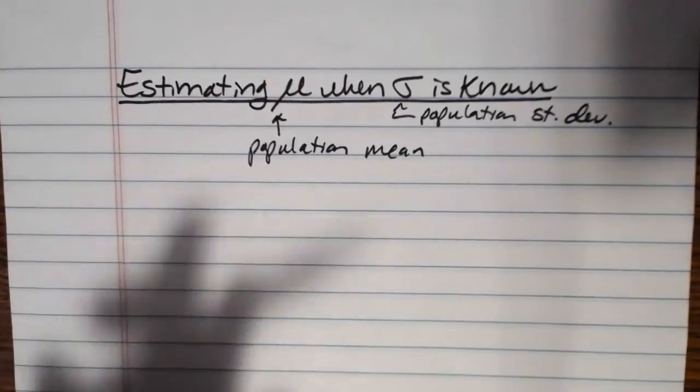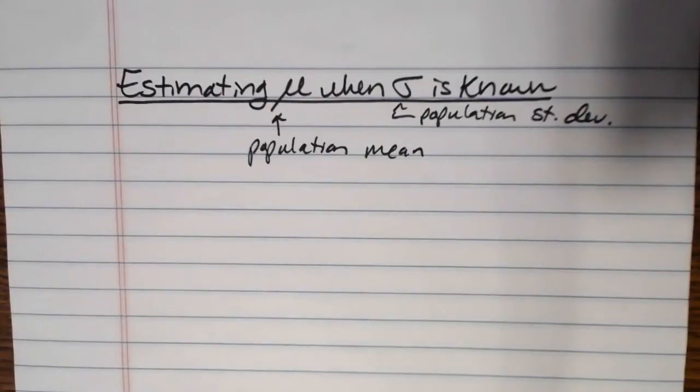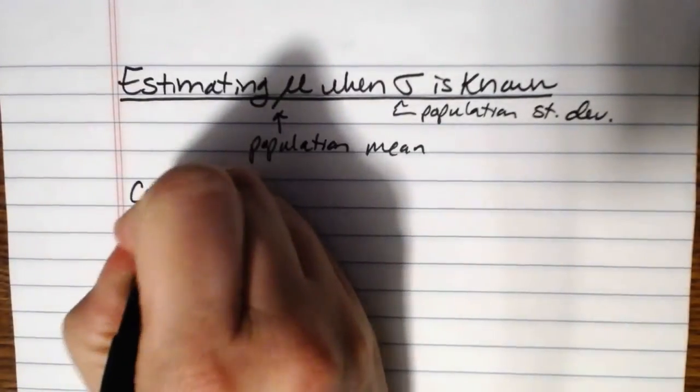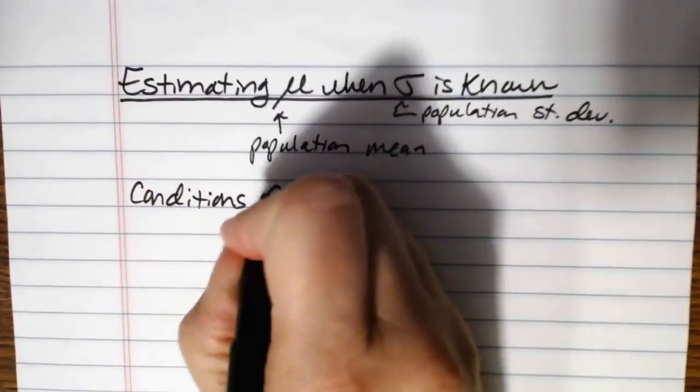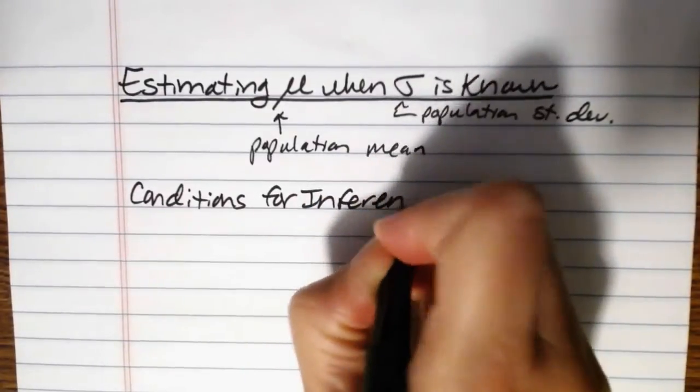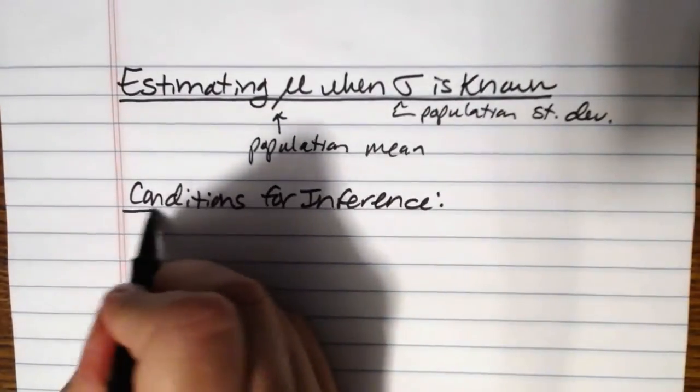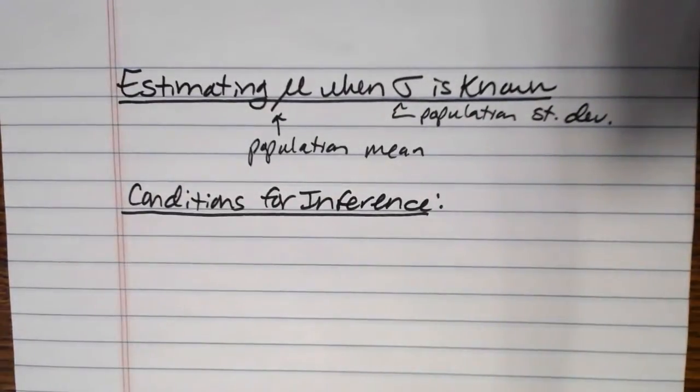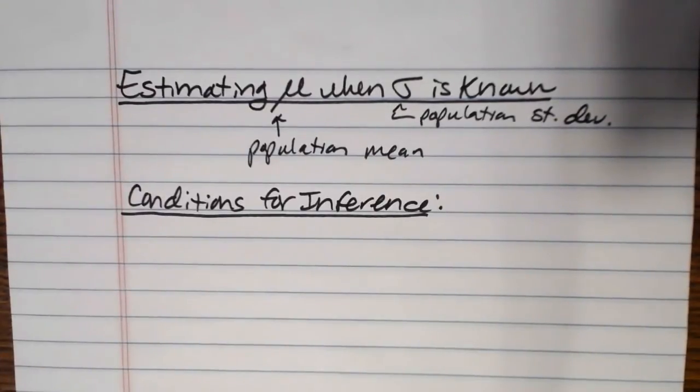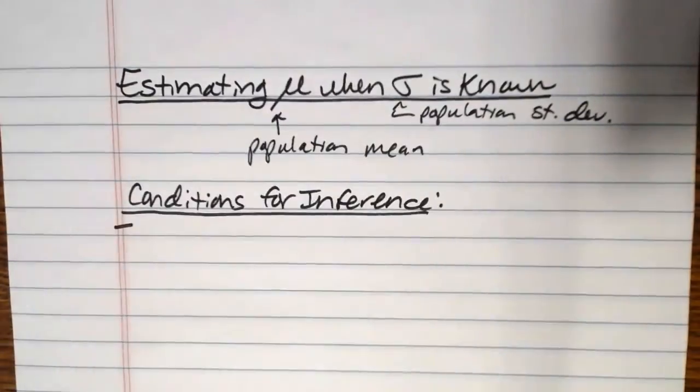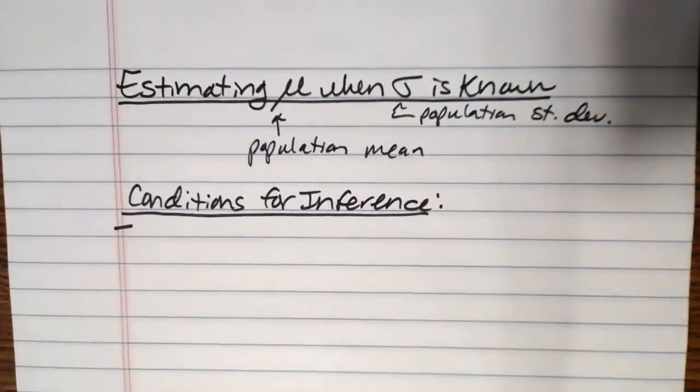Starting here, estimating mu when sigma is known, a couple of things that you need to know. The most crucial is the conditions for inference. Because estimating mu when sigma is known rests on the sampling distribution for x bar, which is by the central limit theorem a normal distribution, we have to meet some conditions for inference here that are based on the conditions from the central limit theorem.